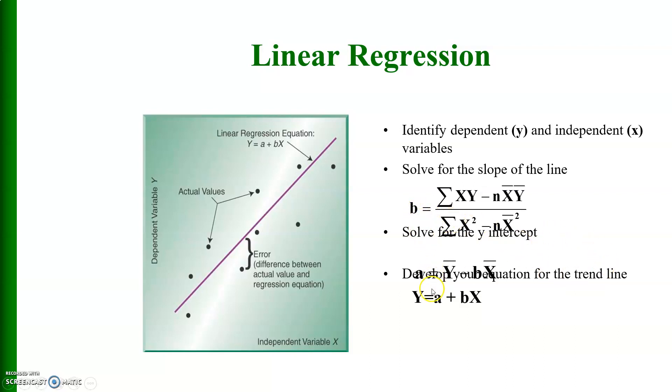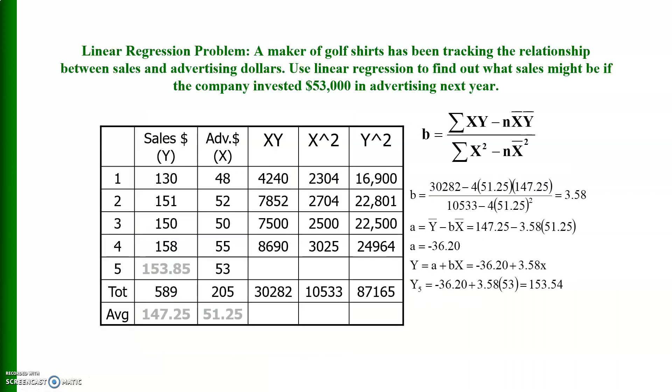This is the regression equation line, linear regression equation line. These are the actual observations and these are the estimated or predicted values of the dependent variable.